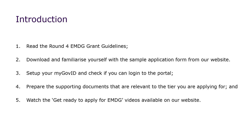This video will demonstrate the EMDG online application form process. Before you start your application form in the portal, you will need to read the Round 4 EMDG Grant Guidelines, download and familiarise yourself with the sample application form from our website, and perhaps even pre-fill your responses in the sample application form where possible so that you can copy and paste them into the online form when it opens. Set up your digital identity and check if you can log in to the portal, prepare the supporting documents that are relevant to the tier you are applying for, and watch the Get Ready to Apply for EMDG videos available from our website.